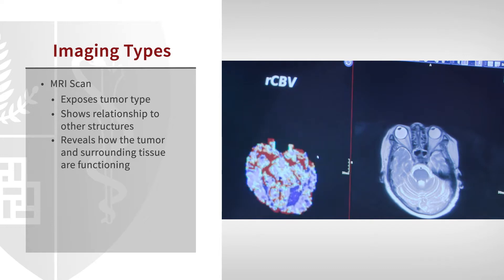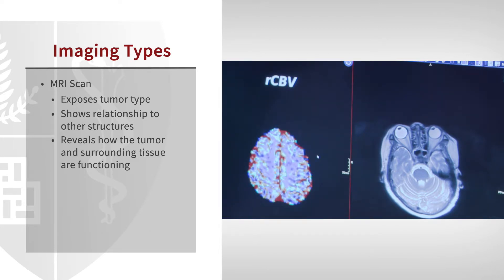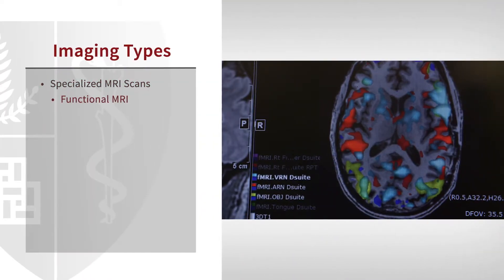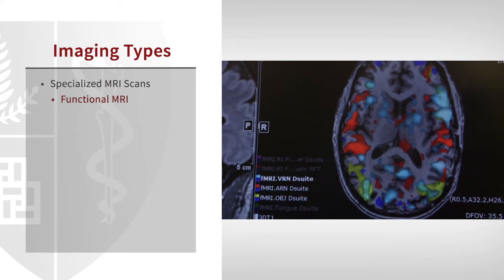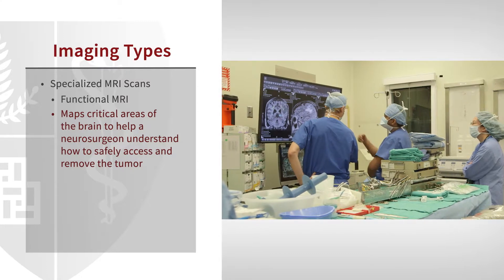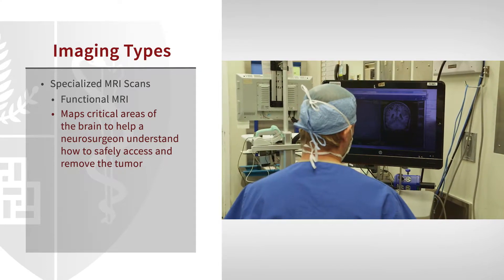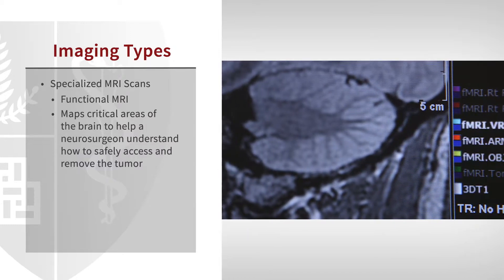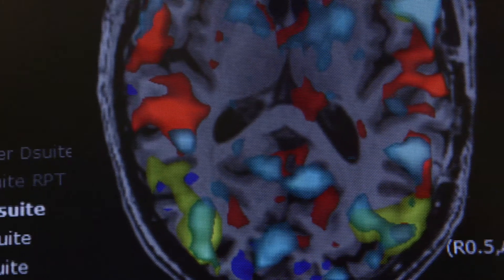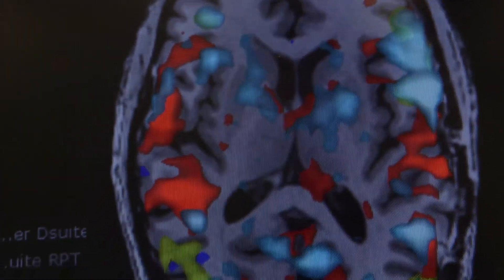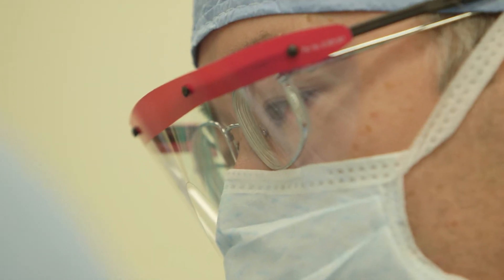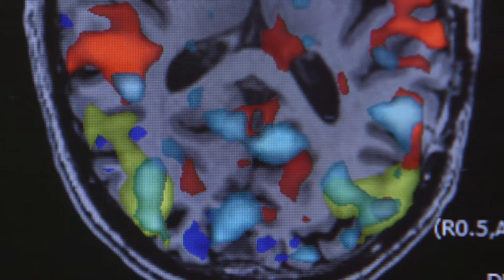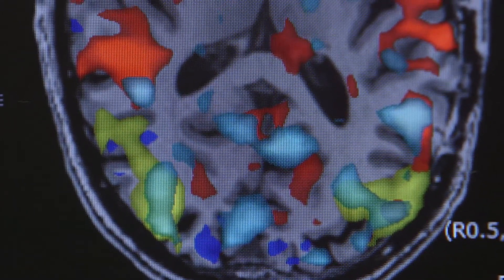There are different imaging modalities used at Stanford that are not necessarily used elsewhere. One is functional MRI, where we look not at the structure of the brain but at the function of specific regions. When a patient is about to undergo surgery for a brain tumor, it's very important for the neurosurgeon to know where the critical functional areas of the brain are located relative to the tumor, so they can spare those precious areas during resection. With functional MRI, we can identify the regions of the brain responsible for speech, vision, and hearing.